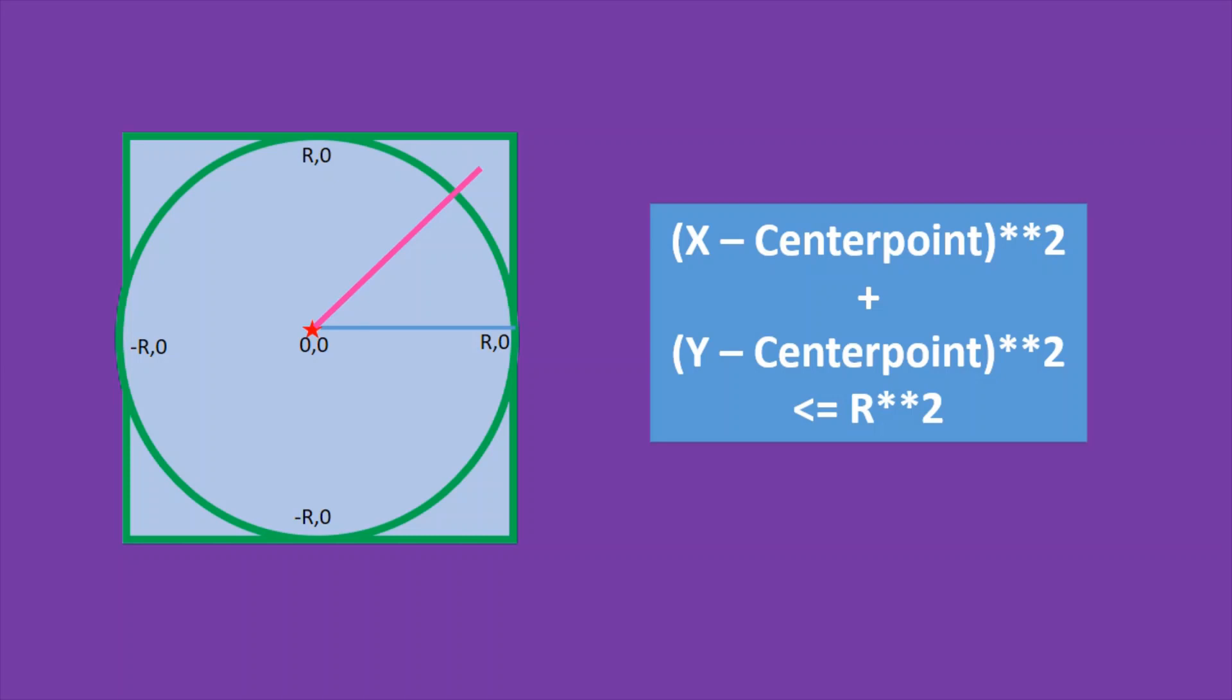In case if this condition is not met, that is the difference of (x minus center point) whole square plus (y minus center point) whole square is greater than r squared, then we can conclude that the point with the x and y coordinate is outside the circle.